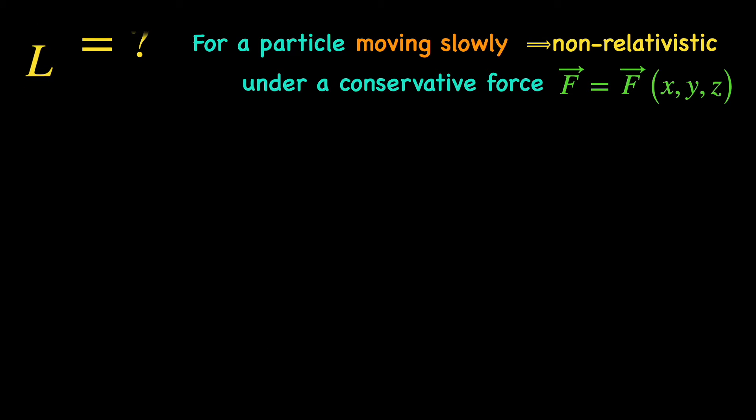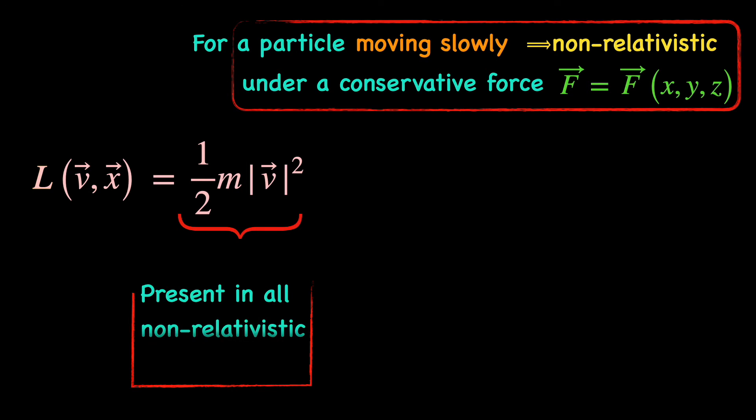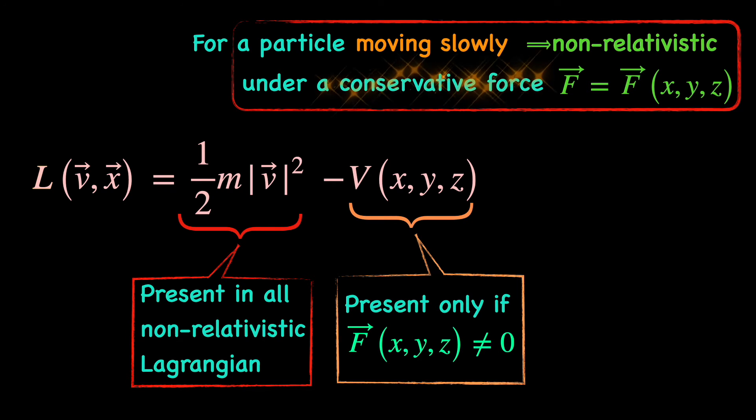So, the full form of the Lagrangian of this particle is basically its kinetic energy which brings in the dependence on the velocity and should always be there in any slowly moving, that is non-relativistic, mechanical system irrespective of whether there is a force acting or not, minus its potential energy which gives the position dependence and is present if and only if there is a non-zero conservative force acting.